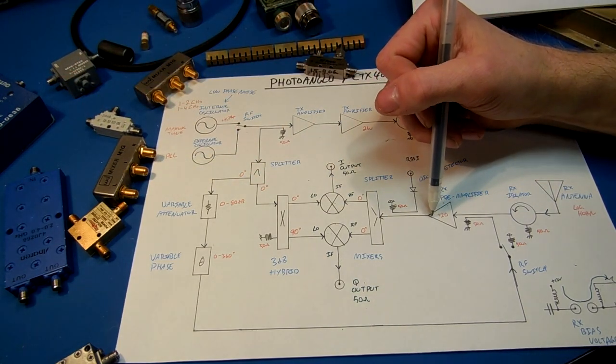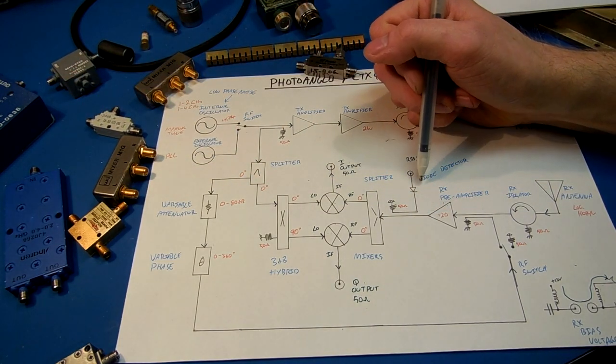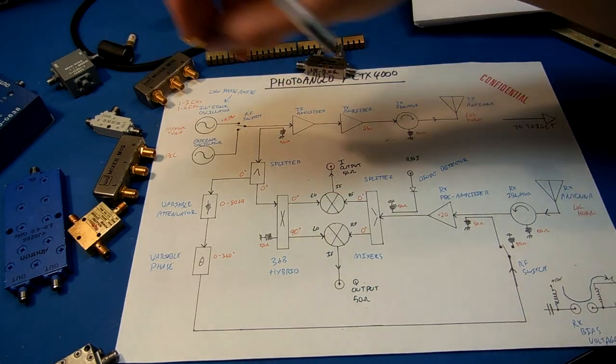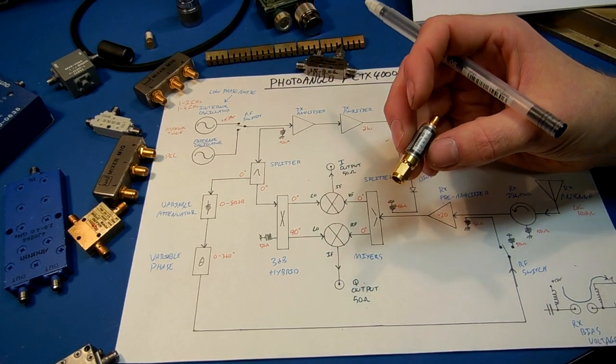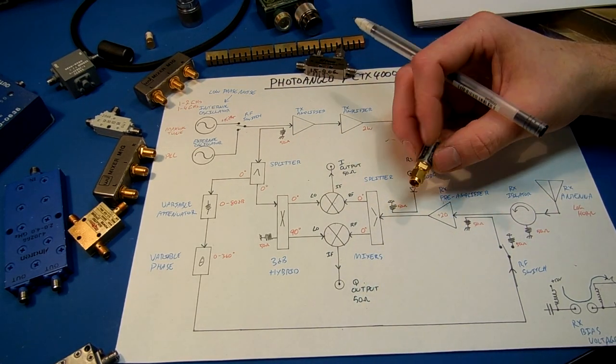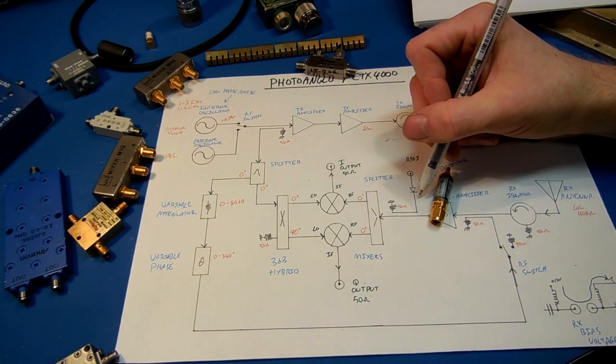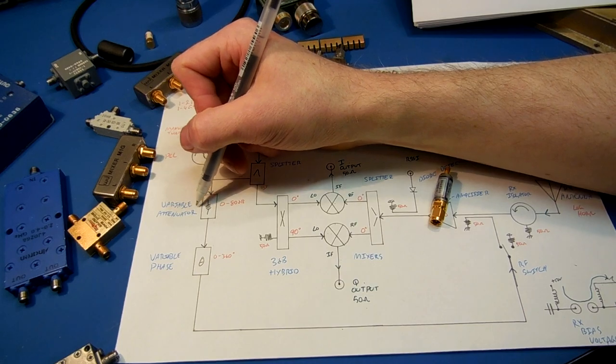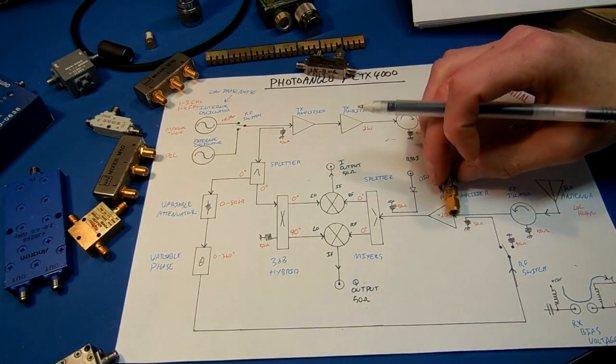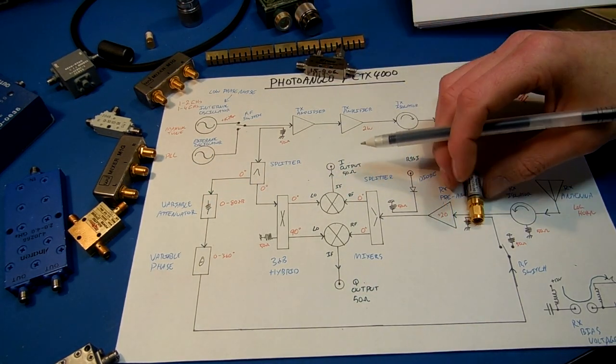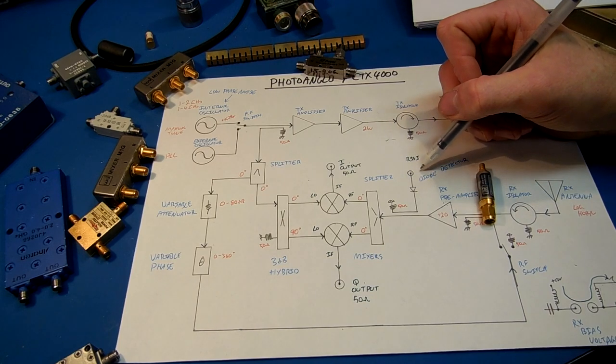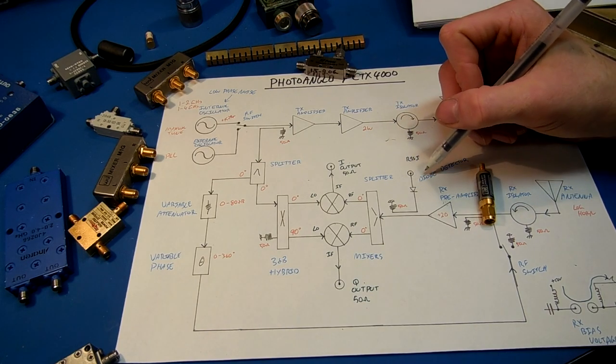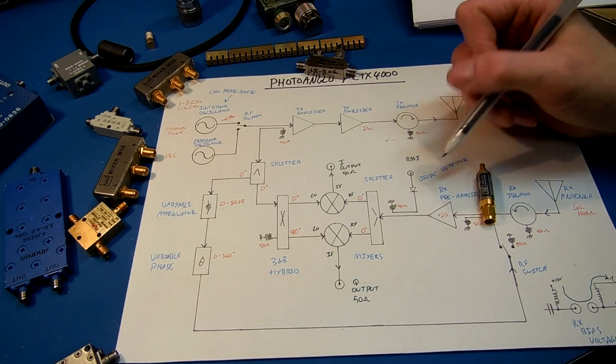We'll sample the output of the received preamplifier with a diode detector. A nice wideband diode detector like this. This is just to get an idea of our received power level to determine the amount of attenuation that we need. By watching the DC output of the diode detector, we can tell. We basically tune it for minimum power on the diode detector output.